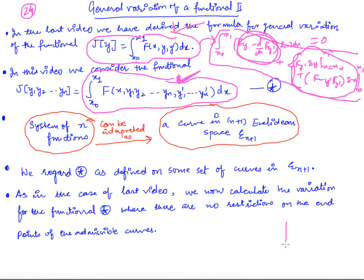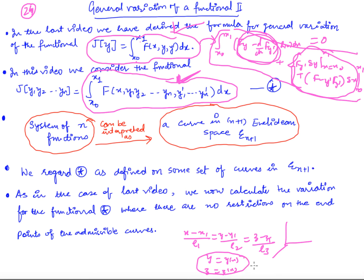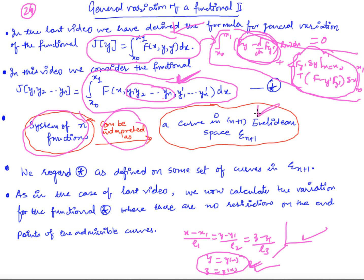We know that in 3D, the equation of a line is (x - x1)/L1 = (y - y1)/L2 = (z - z1)/L3. I can write it as y as a function of x and z as a function of x. So basically these two functions define a curve in 3D. Here we have n functions — y1, y2, ..., yn — so this system of n functions will define a curve. It can be interpreted as a curve in (n+1)-dimensional Euclidean space R^(n+1).